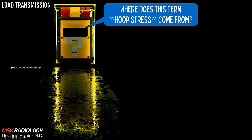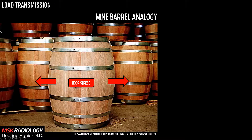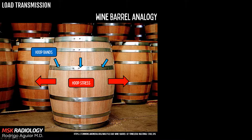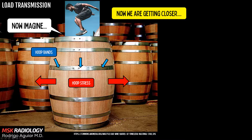Now let's talk about the term hoop stress — where does it come from? This concept was borrowed from physics and mechanics. It is the stress that occurs along the cylinder circumference when pressure is applied, acting perpendicular to the axial direction. A great analogy is the wine barrel: hoop stress tends to split the barrel apart, but the hoop bands counteract this force — just like the circumferential fibers of the meniscus. Now imagine a person jumping up and down on a mobile top lid of the barrel, increasing the hoop stress each time they land on it. That gets us closer to the type of hoop stress the meniscus is exposed to.